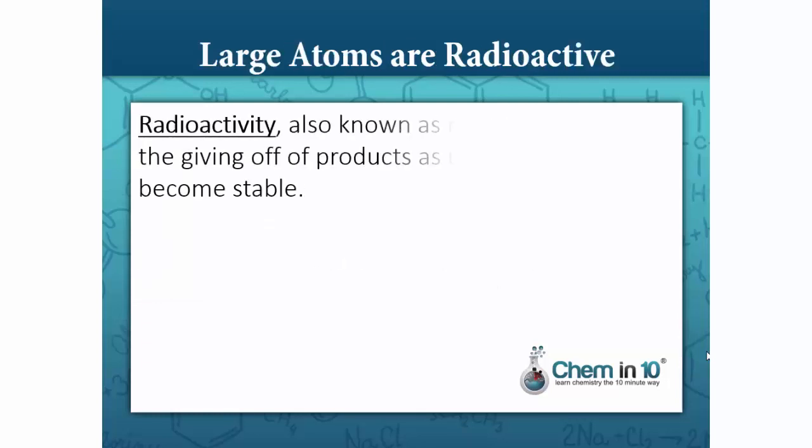This is why large atoms are radioactive, unstable. As a result, these unstable atoms give off products to become stable. This giving off of products to help unstable nuclei become stable is known as radioactivity, or radioactive decay.